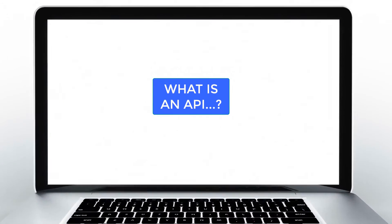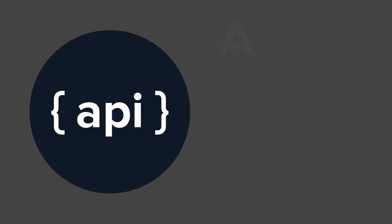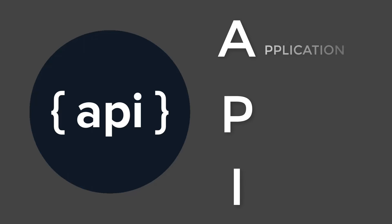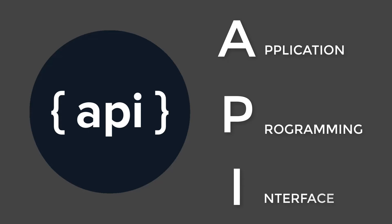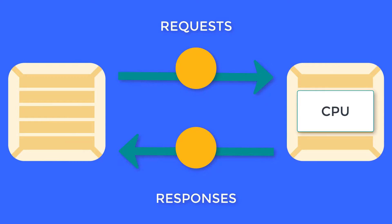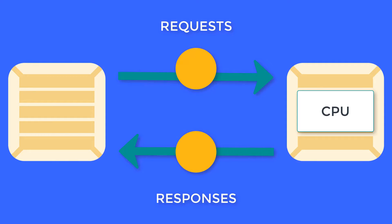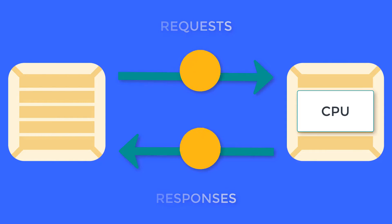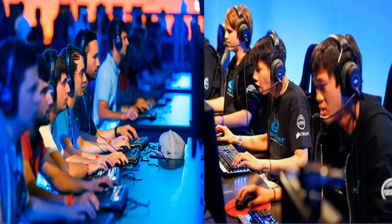So what is an API? For starters, API stands for Application Programming Interface. An API acts like a messenger that takes a request and tells the CPU what you want it to do, and then returns the response back to you.